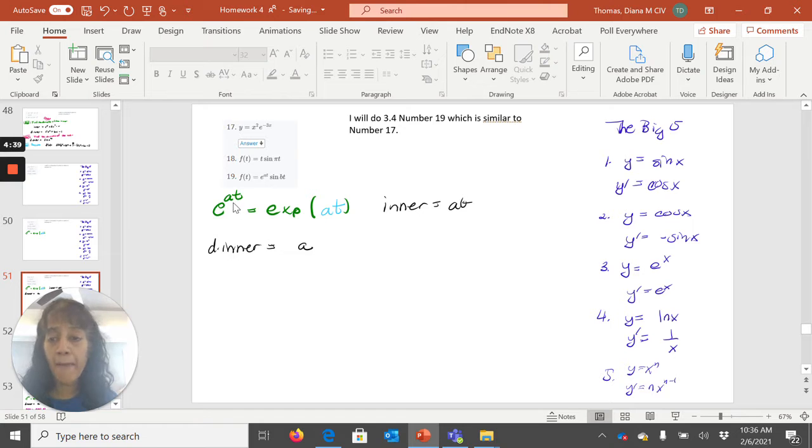The inner function, which might not be apparent when you see e to the a t, is actually a t. If you type in exponentials into Excel, you use this exp function. That means take the exponential of a t. Now you can clearly see your inner function is a t.